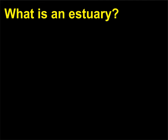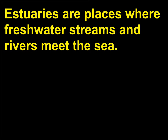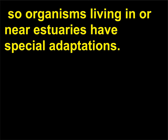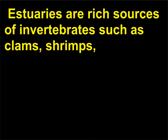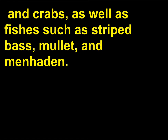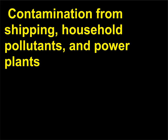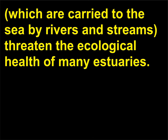What is an estuary? Estuaries are places where freshwater streams and rivers meet the sea. The salinity of such areas is less than that of the open ocean but greater than that of a typical river, so organisms living in or near estuaries have special adaptations. Estuaries are rich sources of invertebrates such as clams, shrimps, and crabs, as well as fishes such as striped bass, mullet, and menhaden. Unfortunately, estuaries are also popular locations for human habitation and businesses. Contamination from shipping, household pollutants, and power plants, which are carried to the sea by rivers and streams, threaten the ecological health of many estuaries.